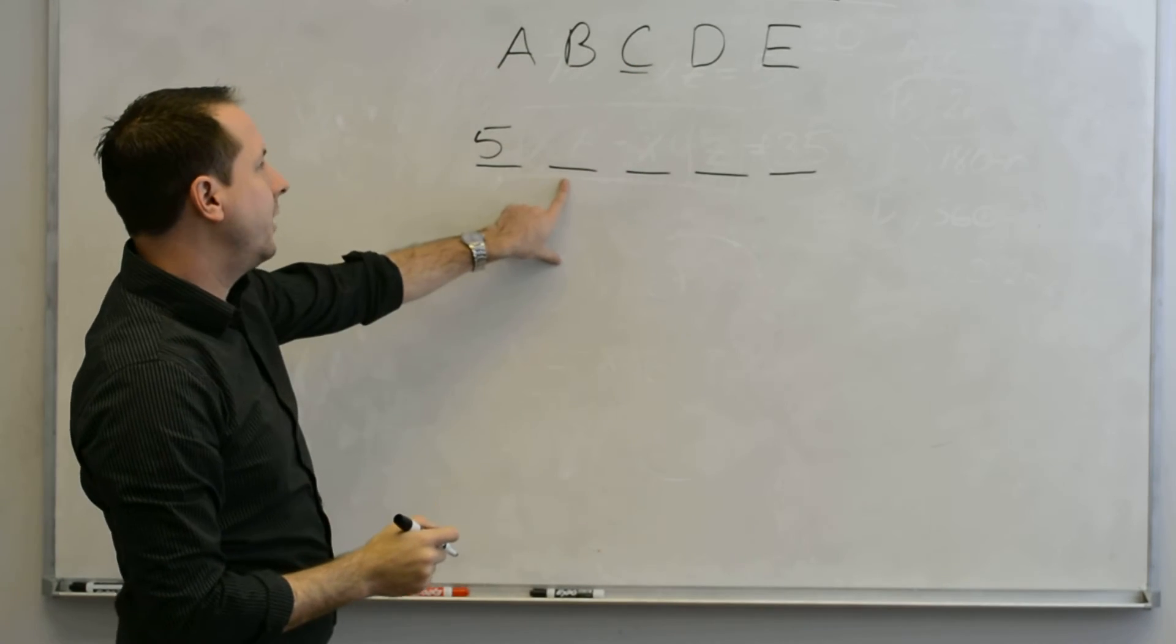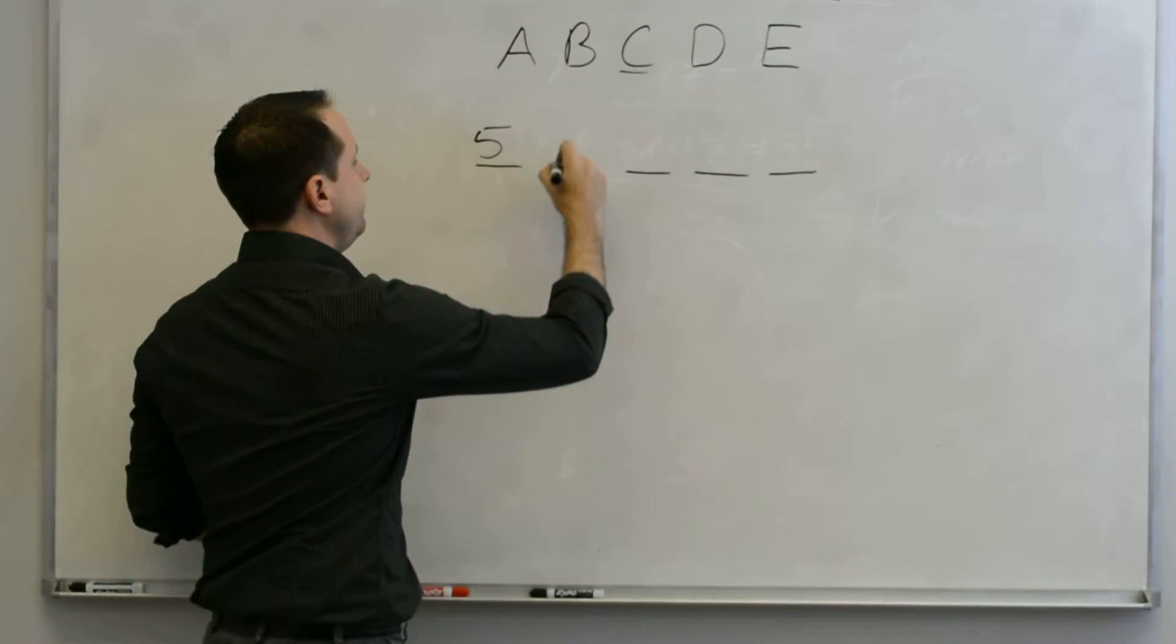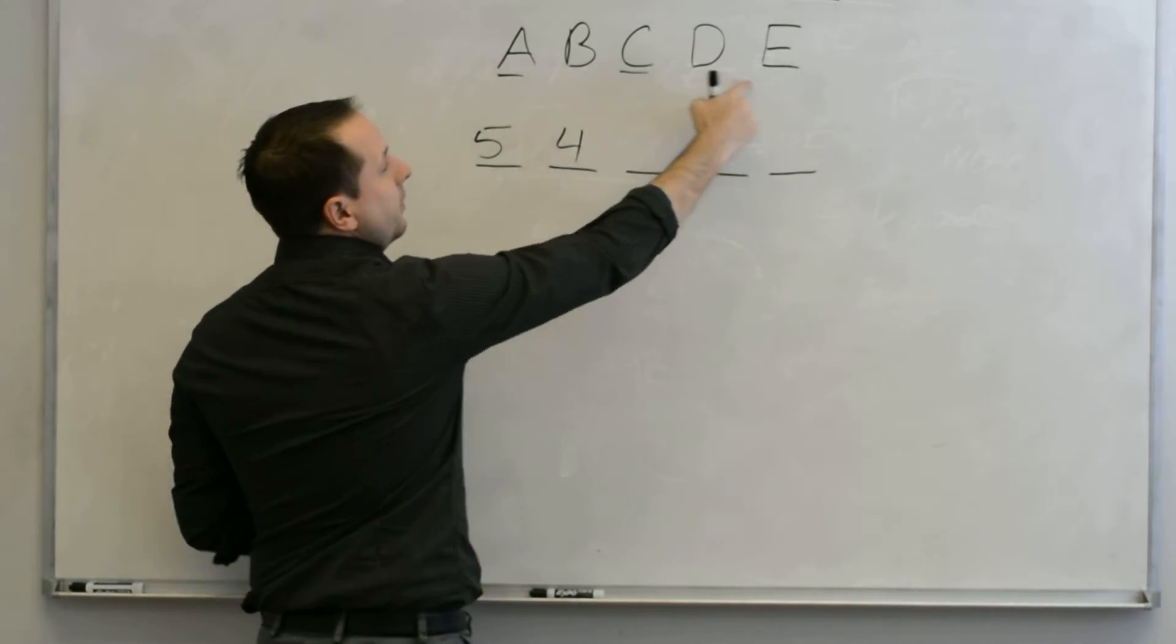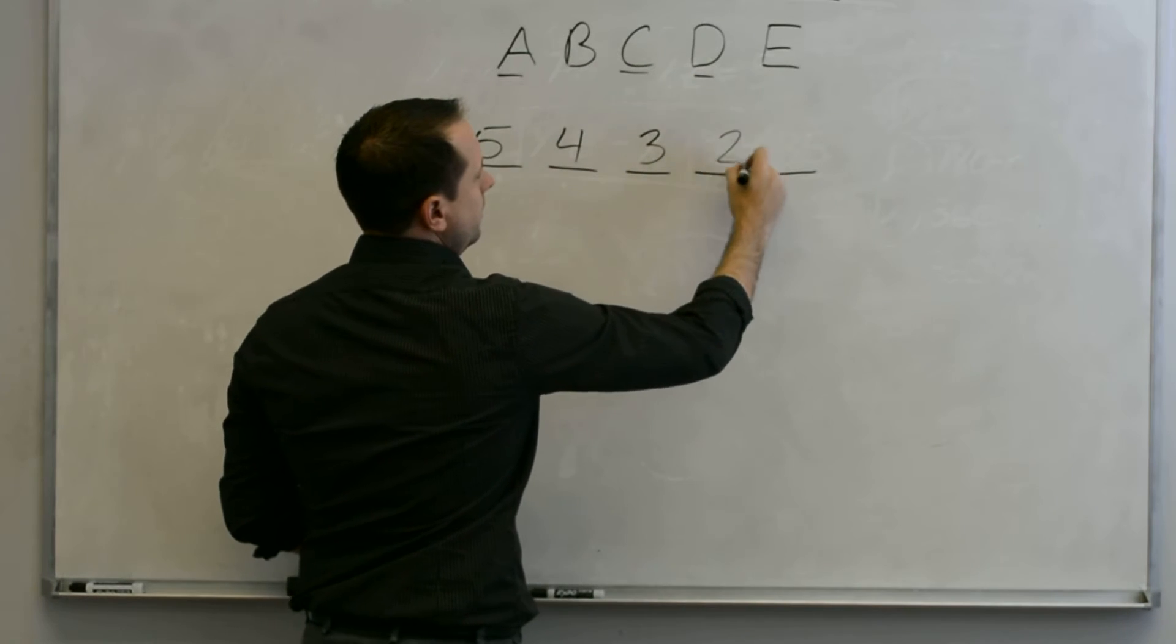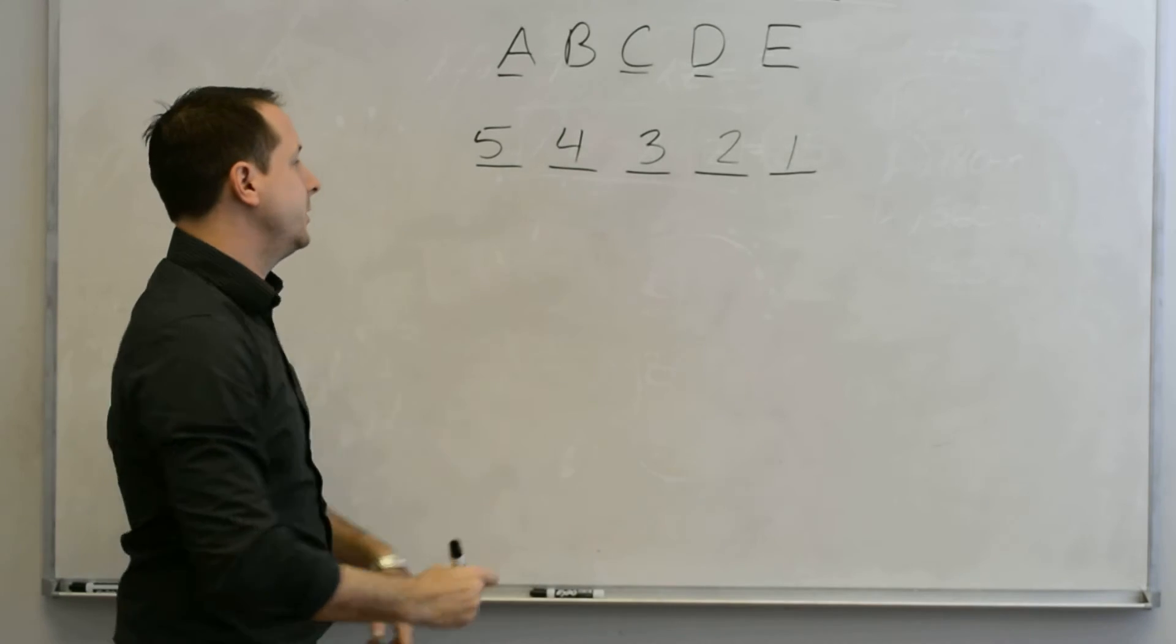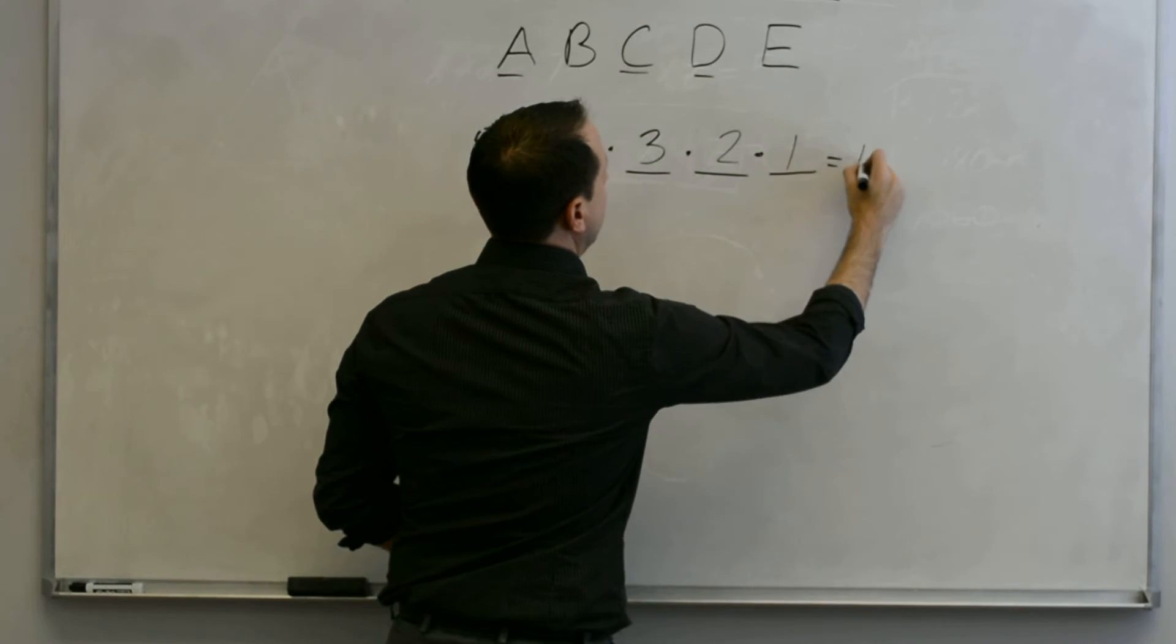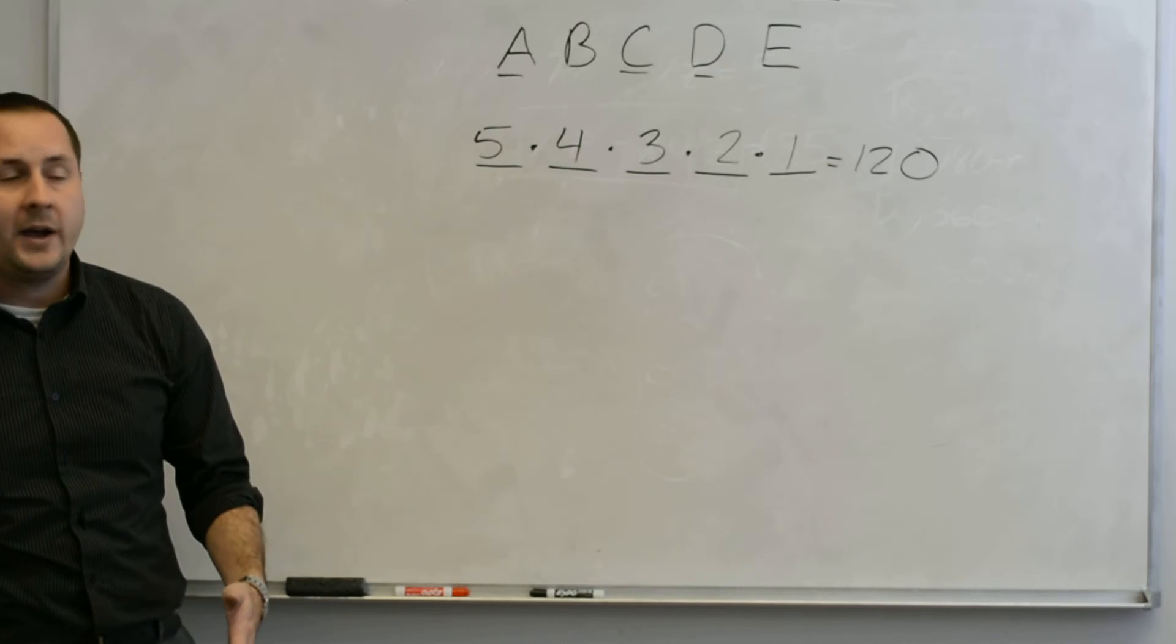Let's say I picked C. For the next letter, I've already used C, so now I've got to pick between the four that are left. So I've got four options for that. Let's say I picked A this time. Now I've got three remaining, and then two, and then one. So when you get finished filling this in, you'll always multiply these values. And it turns out that there are 120 different ways that you can arrange those five values.